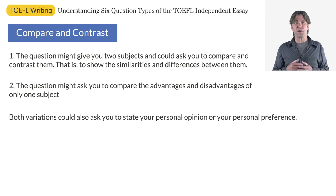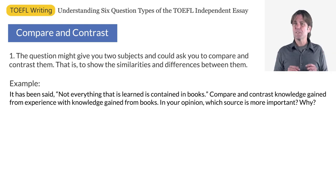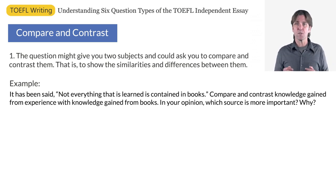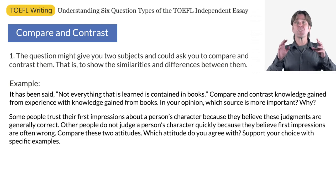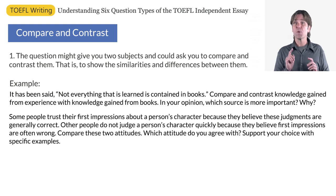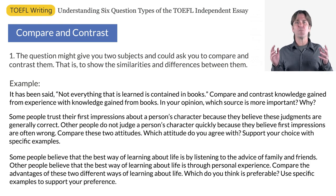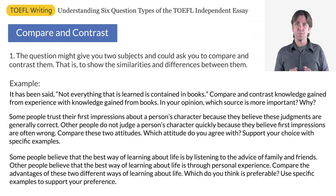Here are examples of the first variation. It has been said that not everything that is learned is contained in books. Compare and contrast knowledge gained from experience with knowledge gained from books. What's your opinion? Which source is more important? Why? Some people trust their first impressions about a person's character because they believe these judgments are generally correct. Others do not judge a person's character quickly because they believe first impressions are often wrong. Compare these two attitudes — which do you agree with? Support your choice with specific examples. Some people believe the best way of learning about life is by listening to the advice of family and friends; others believe it is through personal experience. Compare the advantages of these two different ways of learning about life. Which do you think is preferable?